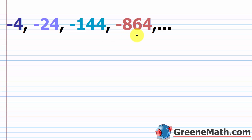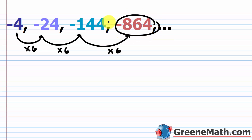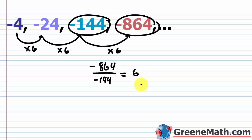You can eyeball this and see what's going on. As I go from negative 4 to negative 24, I multiply by 6. This is going to be consistent — from negative 24 to negative 144, multiply by 6. From negative 144 to negative 864, we multiply by 6. If you didn't see this by eyeballing it, you could take two terms that are next to each other, take the term on the right, and divide by the term on the left. For example, negative 864 divided by negative 144 gives positive 6.